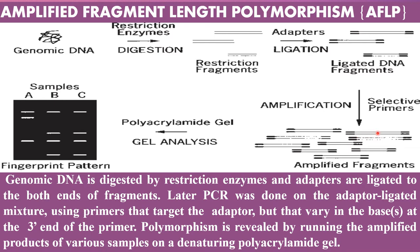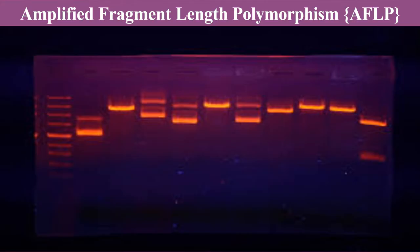Polymorphism is revealed by running the amplified product of various samples on a denaturing polyacrylamide gel. Amplified Fragment Length Polymorphism, AFLP, technology is a DNA fingerprinting technique that combines RFLP — that is Restriction Fragment Length Polymorphism — and PCR.